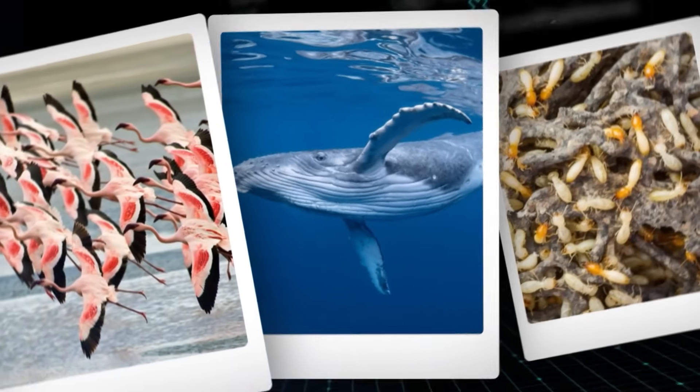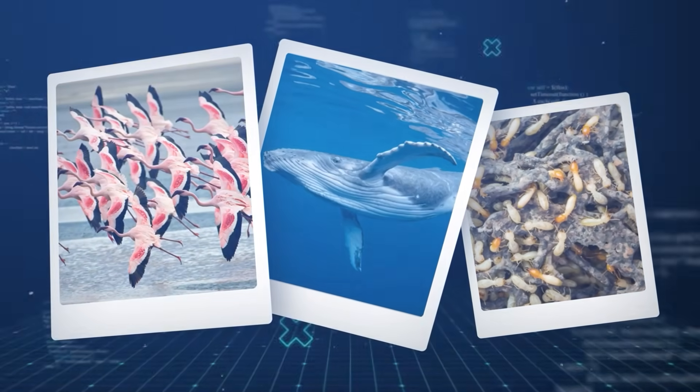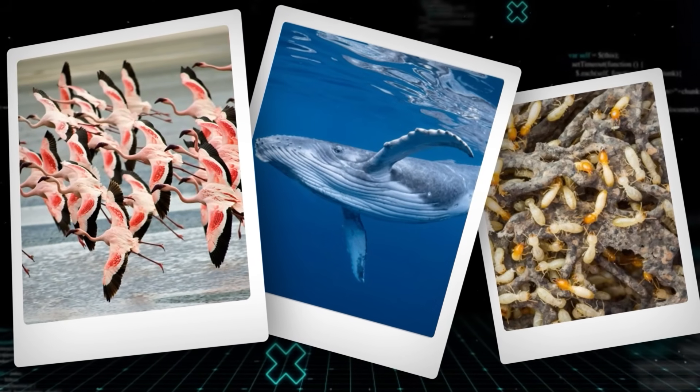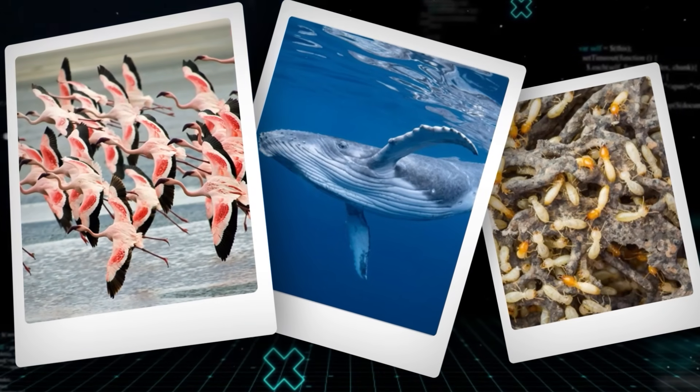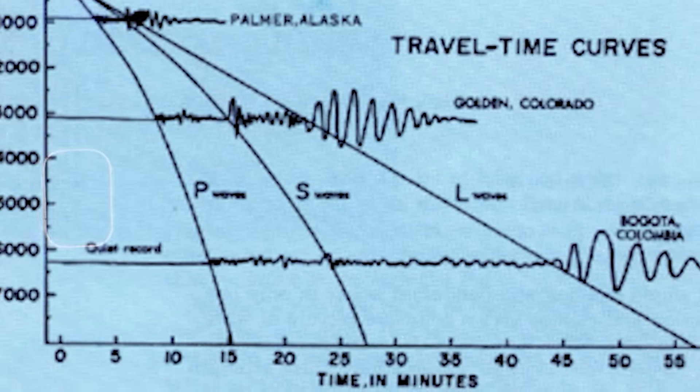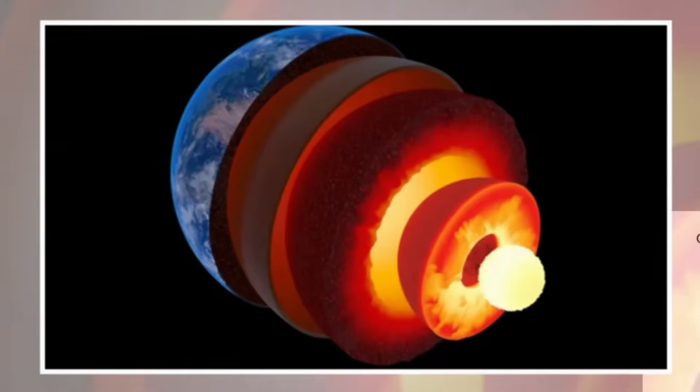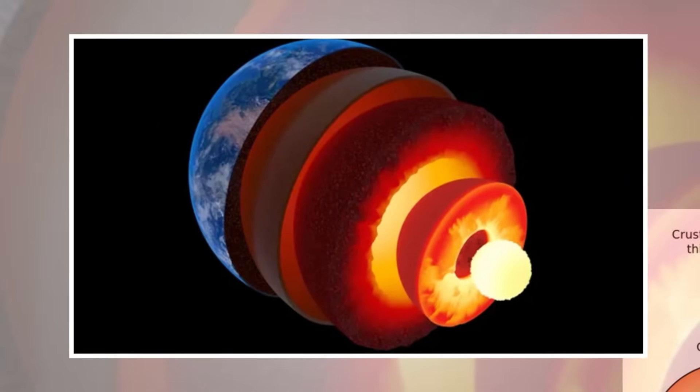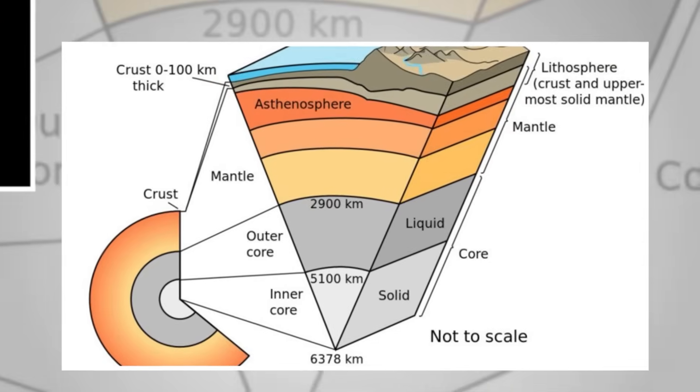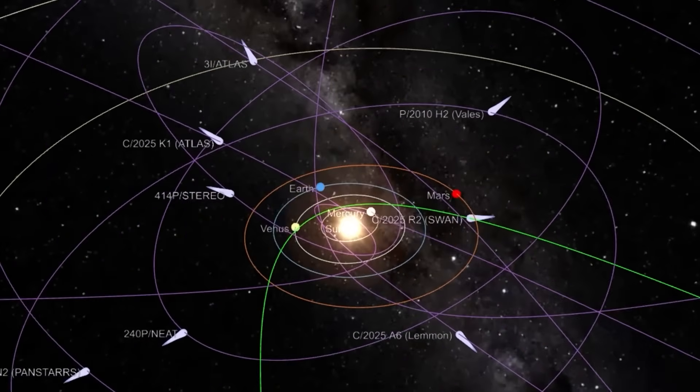But most eerie of all was a phenomenon observed in animals. Entire populations of migratory birds, whales, and even subterranean insects simultaneously altered their navigation patterns, as if some invisible compass had flipped. It was as if Earth itself remembered something, a pattern buried in its lithosphere. And Three-Eye Atlas was the trigger that brought it to the surface.